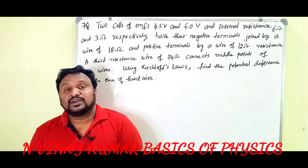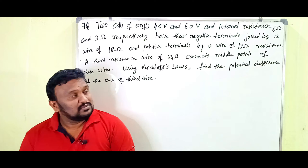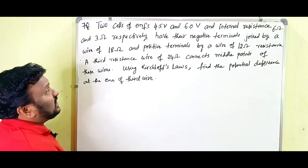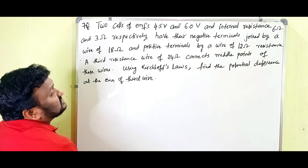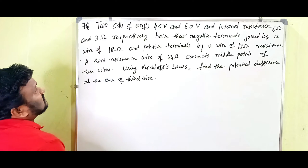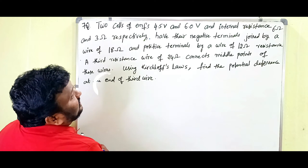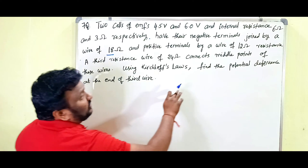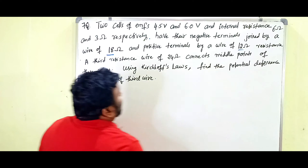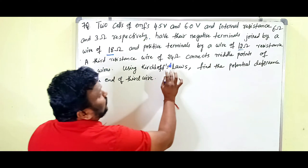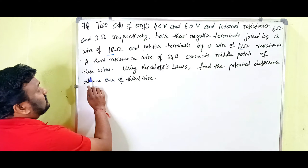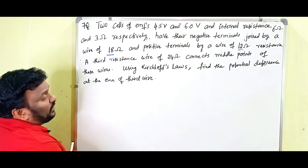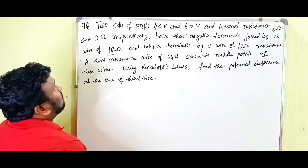Hi everyone. In this video we are going to discuss a problem on Kirchhoff's Laws. It is on the board. Two cells of EMFs 4.5 volts and 6.0 volts and internal resistances of 6 ohms and 3 ohms respectively. The negative terminals are joined by a wire of 18 ohms and the positive terminals by a wire of 12 ohms resistance. A third wire of 24 ohms connects the middle points of these wires. Using Kirchhoff's Laws, find the potential difference at the ends of the third wire.